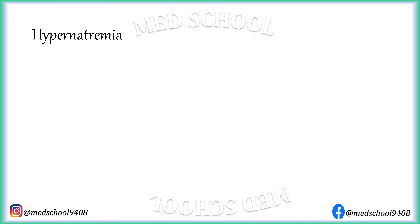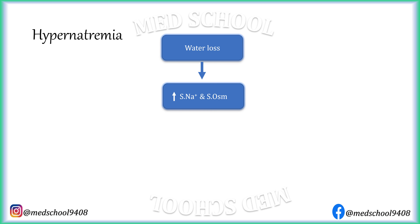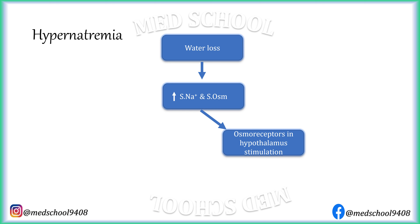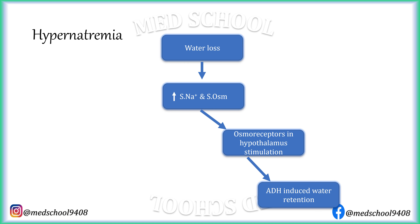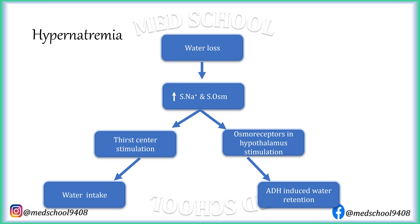First, let us understand how total body water, total body sodium, and serum sodium are maintained in normal range. When there is water loss due to sweating or insensible loss through the lungs, serum osmolarity and serum sodium levels increase. This stimulates osmoreceptors in the hypothalamus, which leads to ADH release from the pituitary. ADH, through V2 receptors, increases water reabsorption through the collecting ducts of the kidneys. Increased serum sodium and osmolarity also stimulate thirst centers, leading to water intake. Both these processes add free water to the body and decrease serum sodium and osmolarity back to normal.